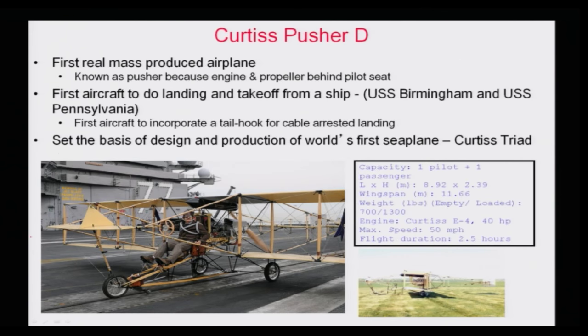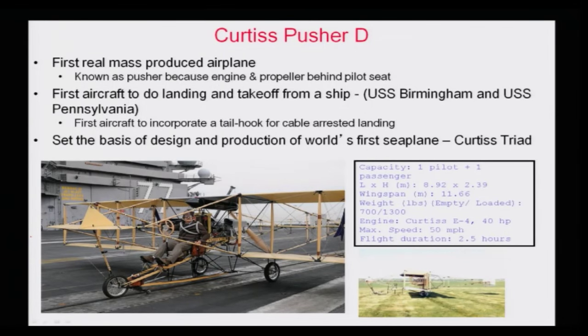Next, we will talk about another important aircraft called the Curtis Pusher. Many of the UAVs — unmanned aerial vehicles with no pilot on board — operate on the pusher configuration. From a business standpoint, this is where the mass production of aircraft happened. It is called a pusher because the engine is at the back.